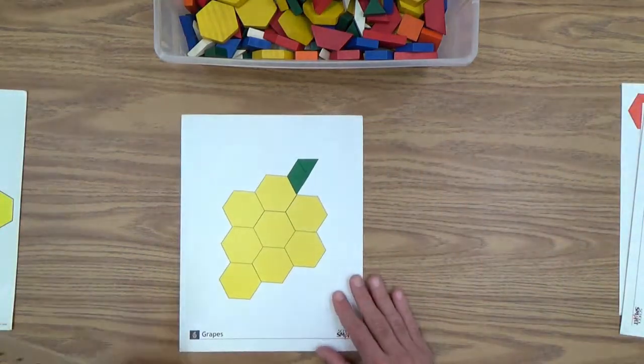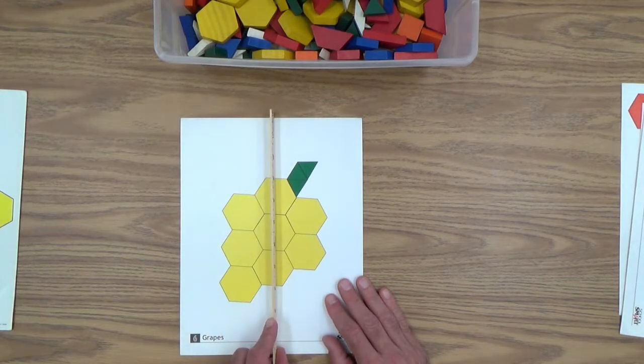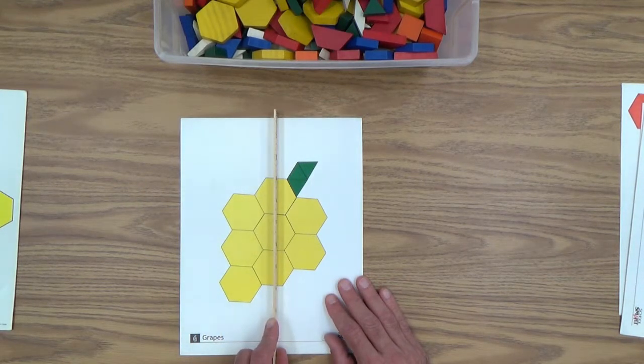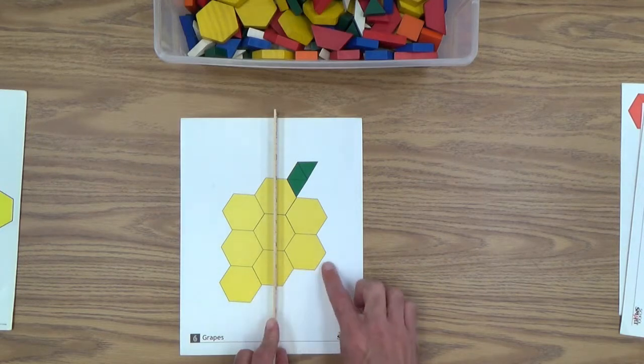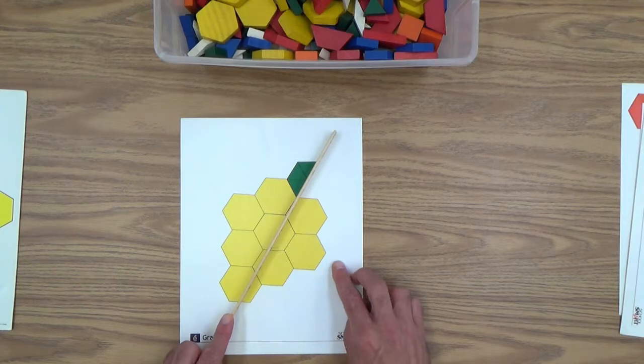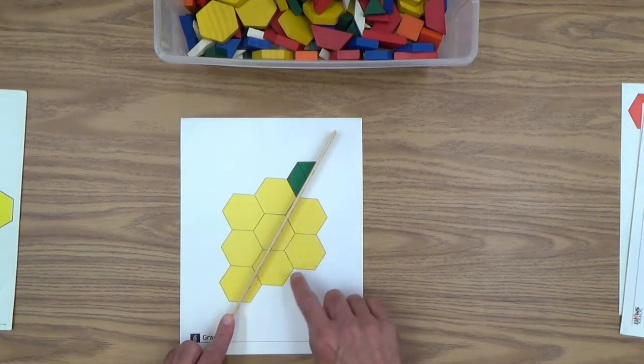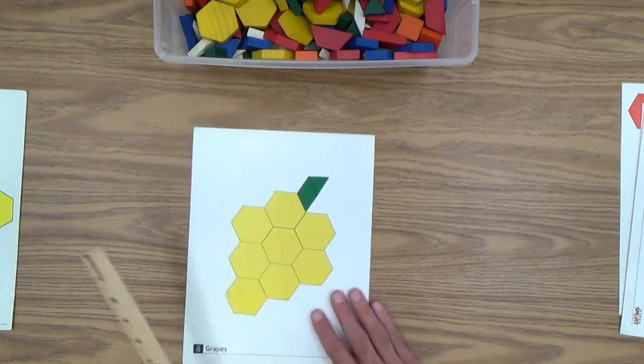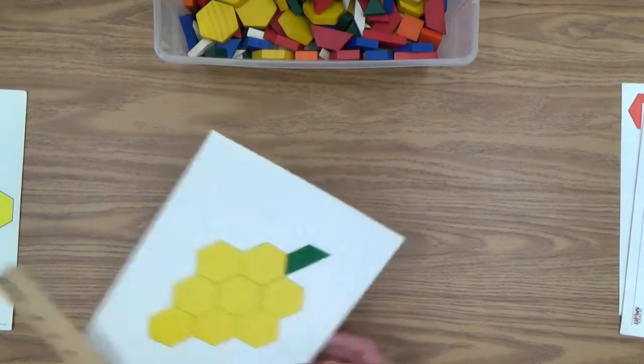Remember, we started with the grapes here. Well, no matter where you put this line of symmetry, which is your ruler, as you can see, those certainly aren't the same. Those certainly aren't the same. They're different. And there's no symmetry in this particular design.